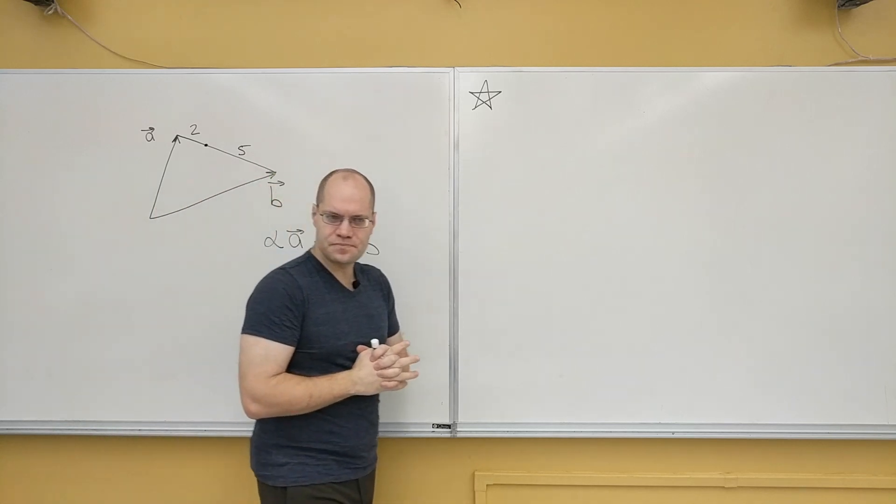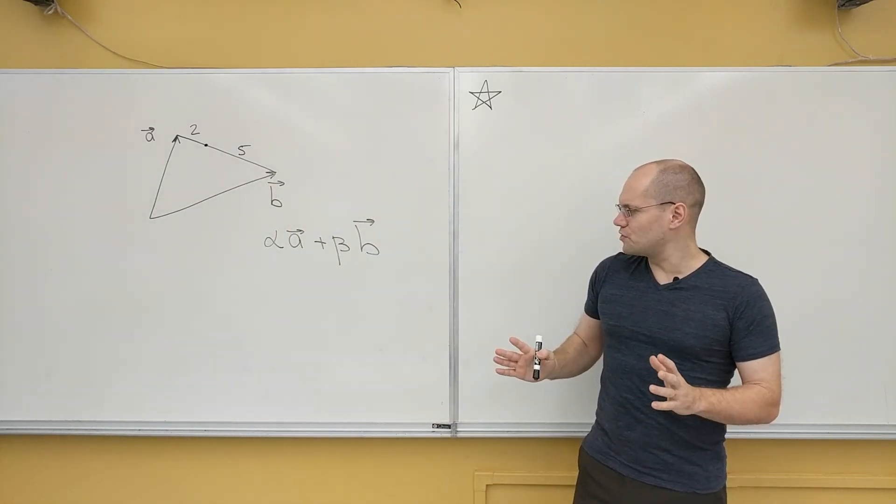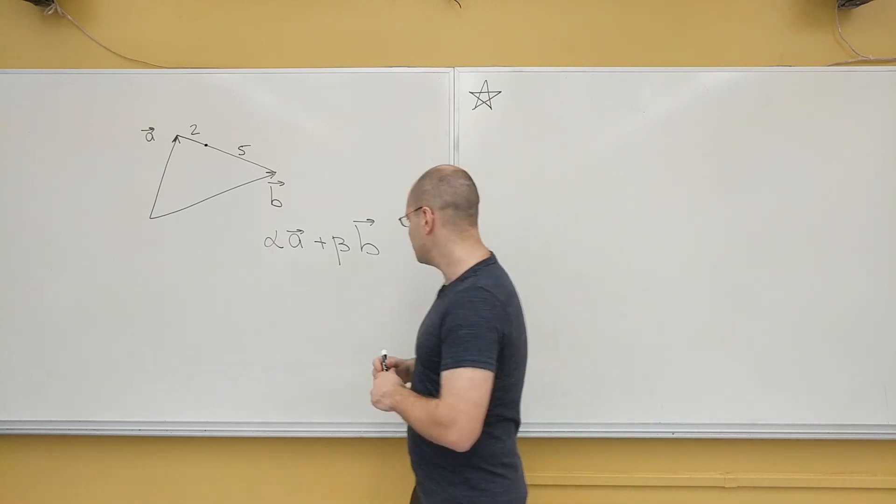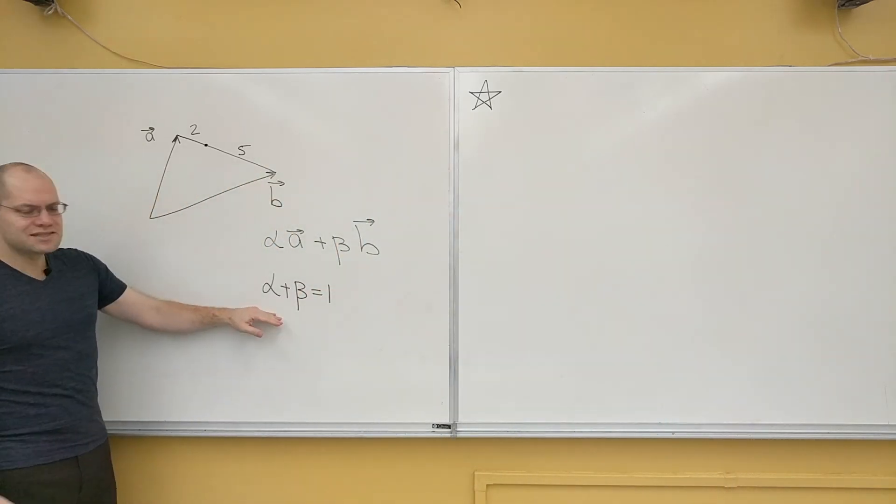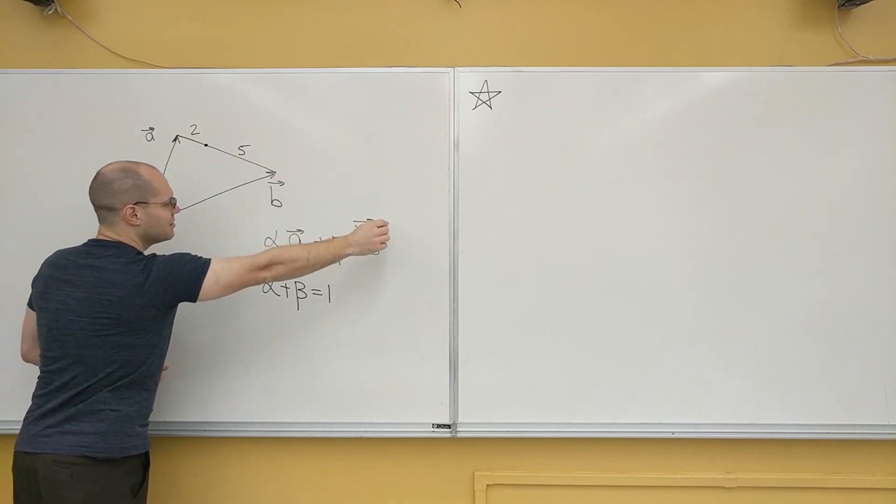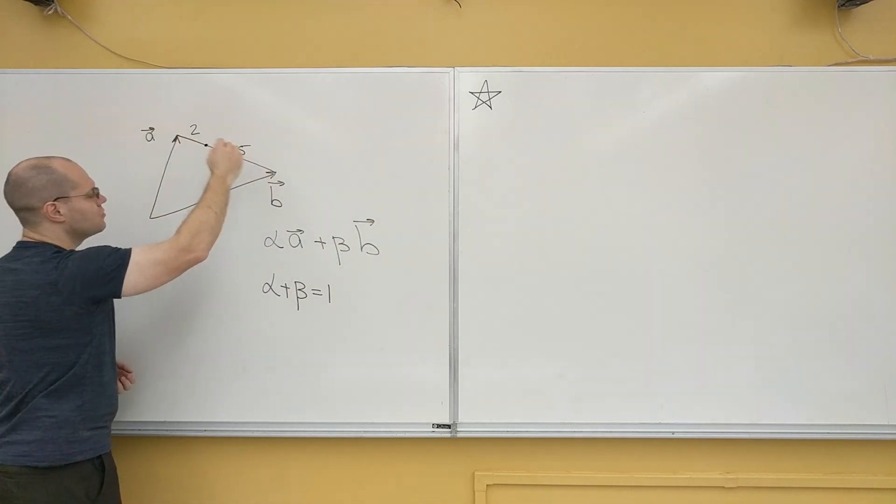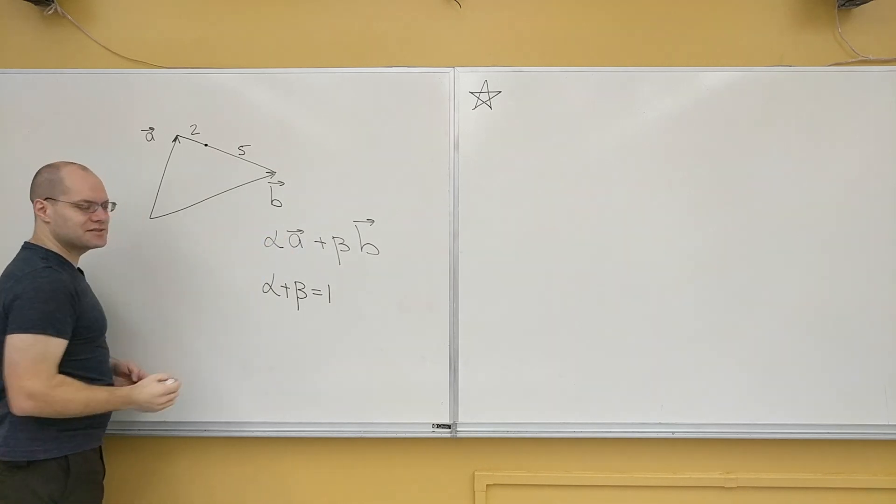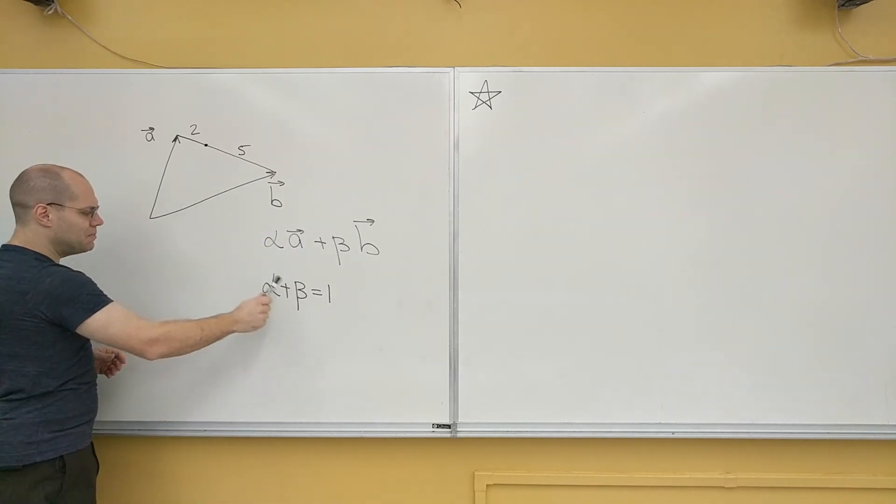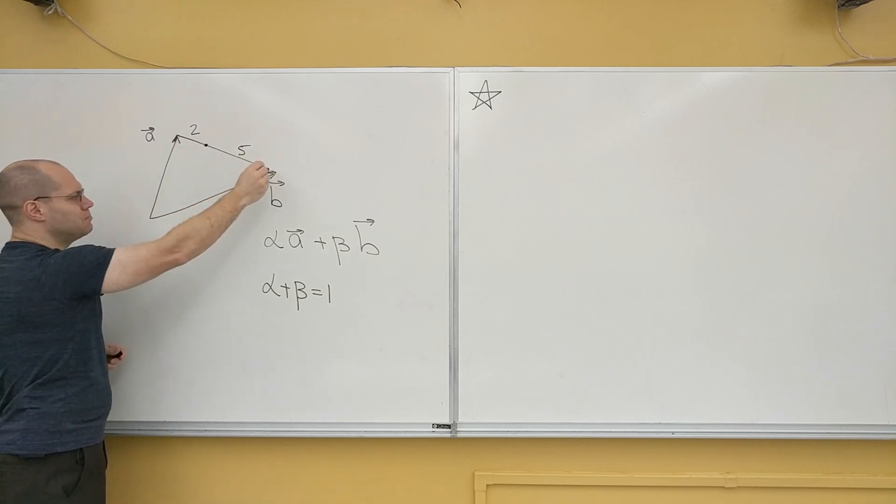Well, one thing we know, that I won't go over right now, is that alpha plus beta must equal 1. This condition by itself puts you on the straight line that passes through the tips of A and B. And if alpha and beta are both less than 1, then you're in between.